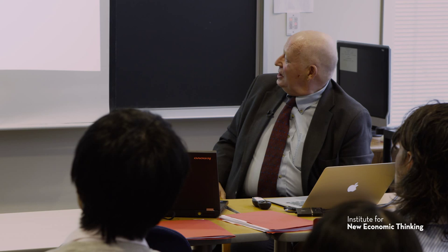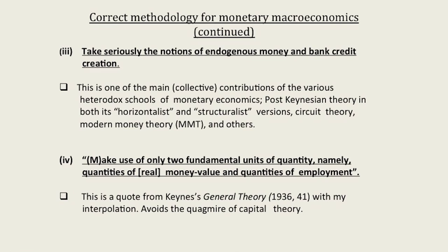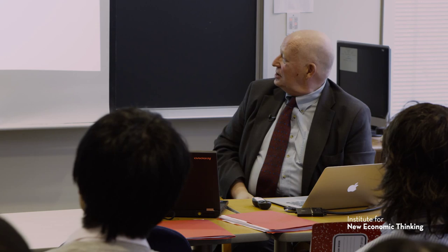We should take seriously the notions of endogenous money and bank credit creation. I've called this one of the main collective contributions of the various heterodox schools of monetary economics — the post-Keynesians, both structuralists and horizontalists, circuit theorists, so-called modern money theorists, and others. There are currently various claims about scholarly priority — who got there first. From my point of view, this understanding of credit, money, and endogenous money has been very much a collective achievement of these different schools.